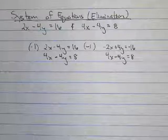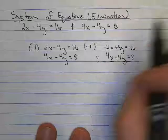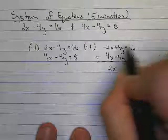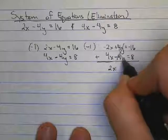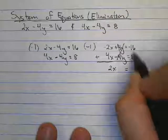Now when I add these two equations together, negative 2x plus 4x will be 2x, 4y and negative 4y those cancel and then negative 16 plus 8 will be negative 8.